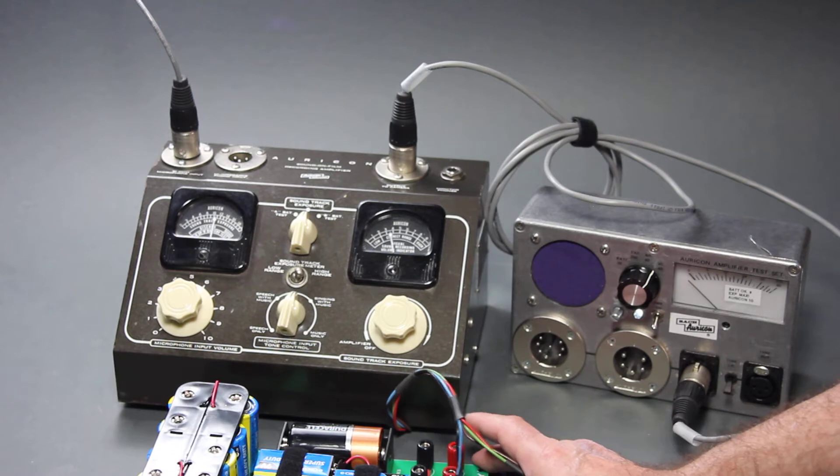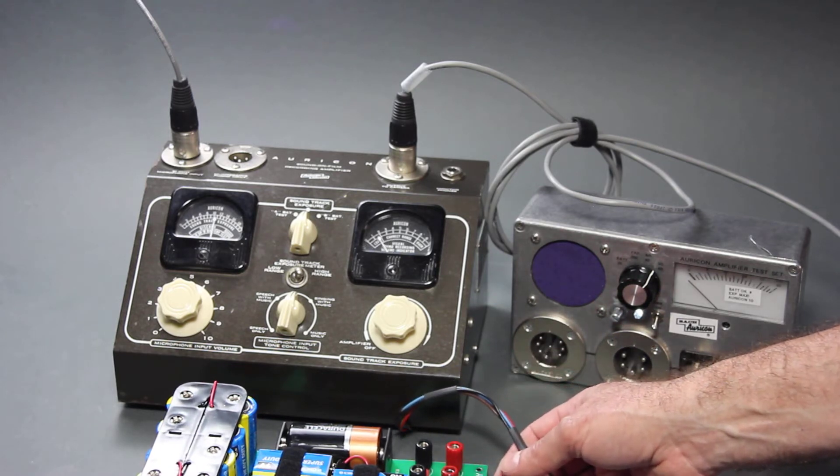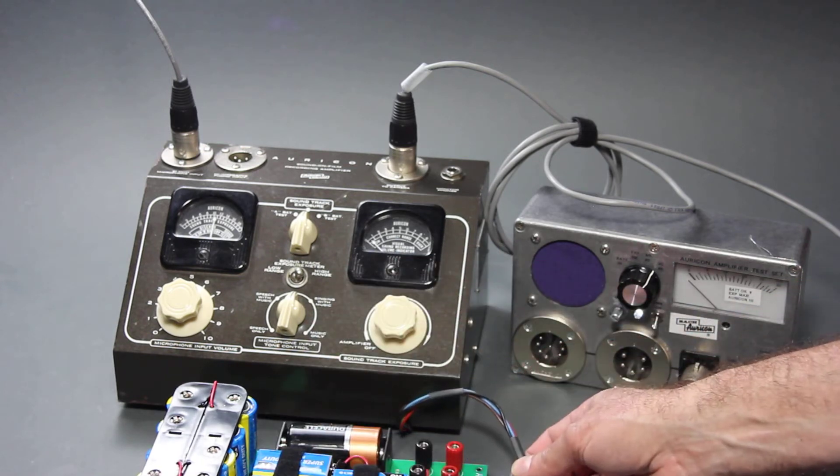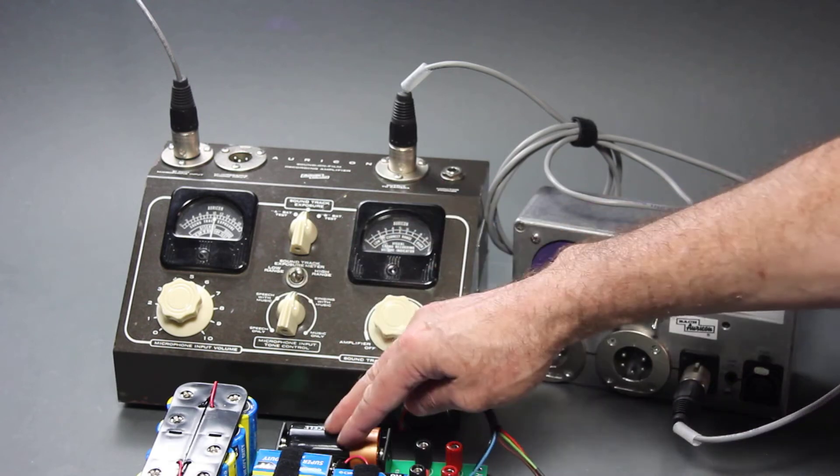The best way to hook this thing up safely is to start with everything disconnected, and the batteries removed, and then hook up that wiring harness, then install the batteries. And the best way to install them is first the D-cell,